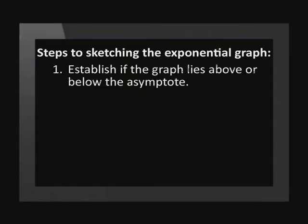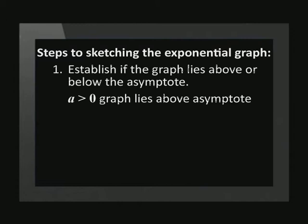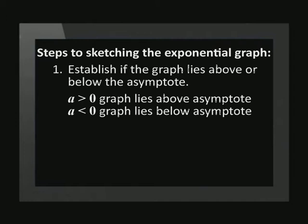Firstly, we need to establish whether the graph lies above or below the asymptote. If the value of a is positive, the graph will lie above the asymptote, and if a is negative, the graph will lie below the asymptote.